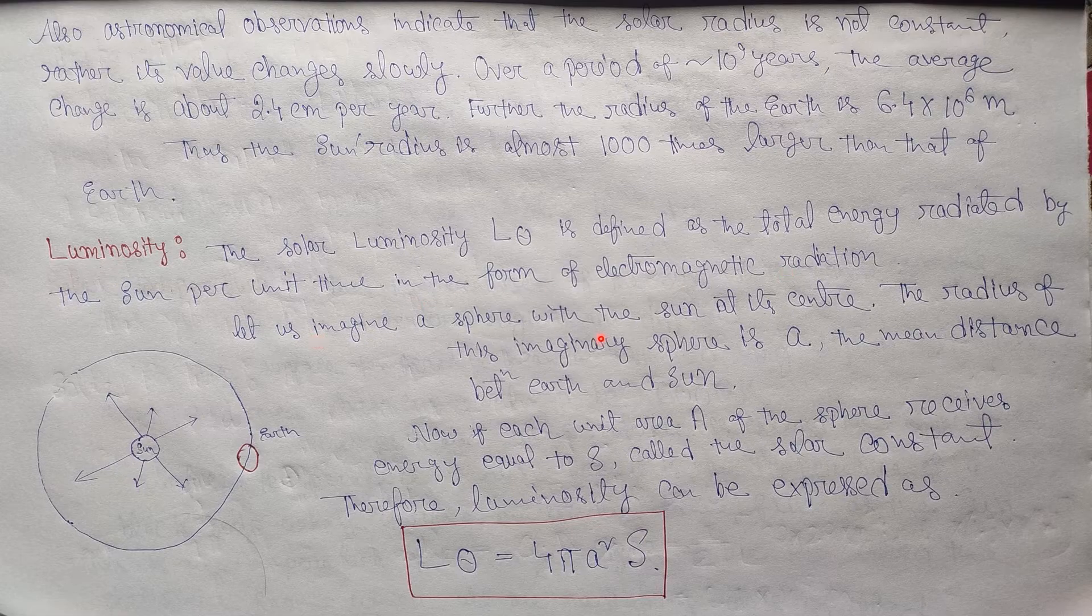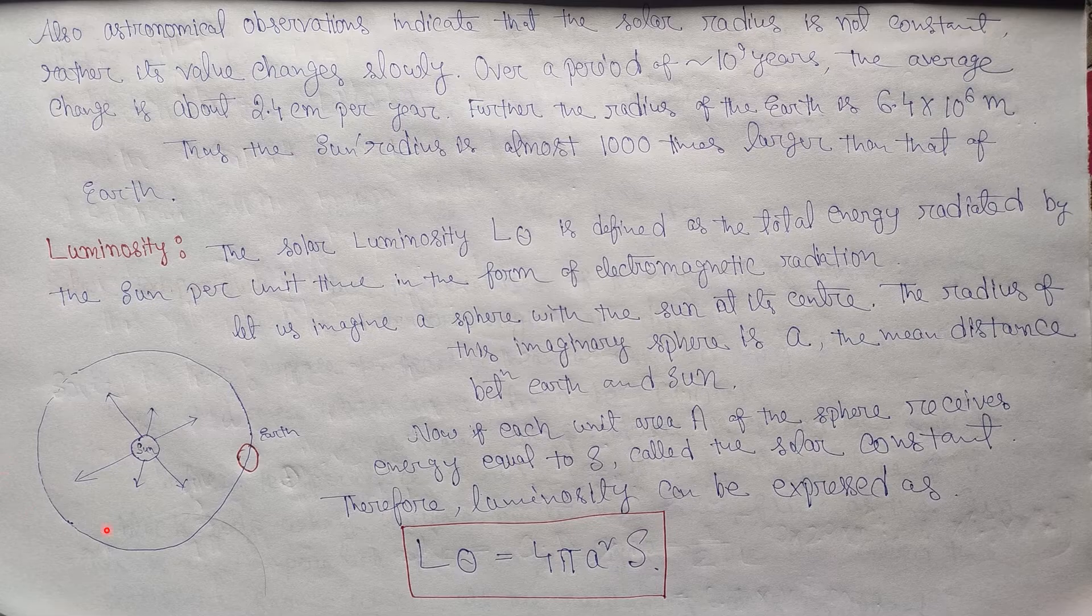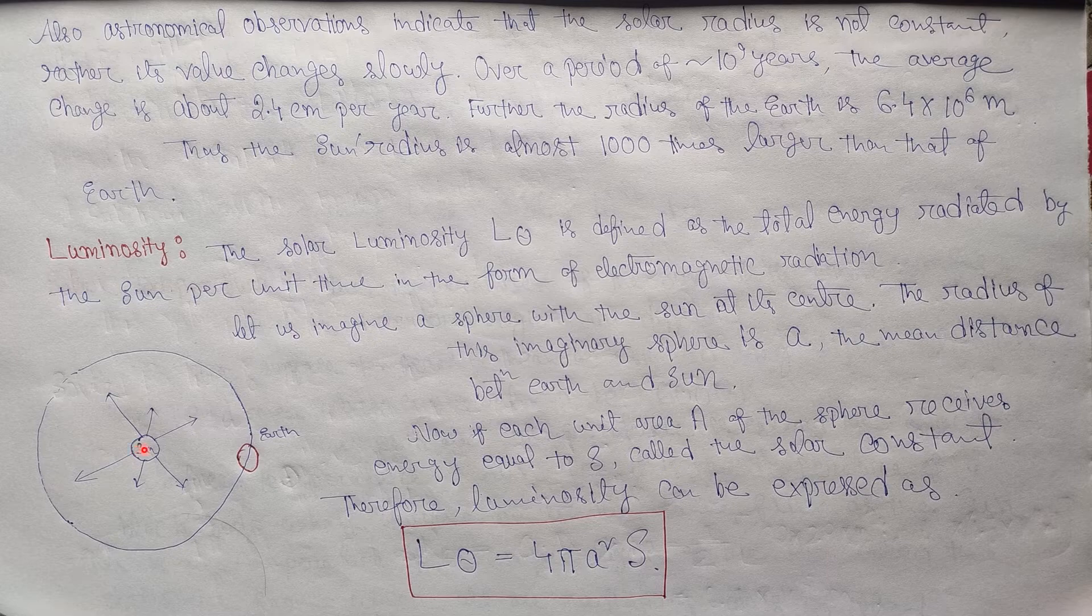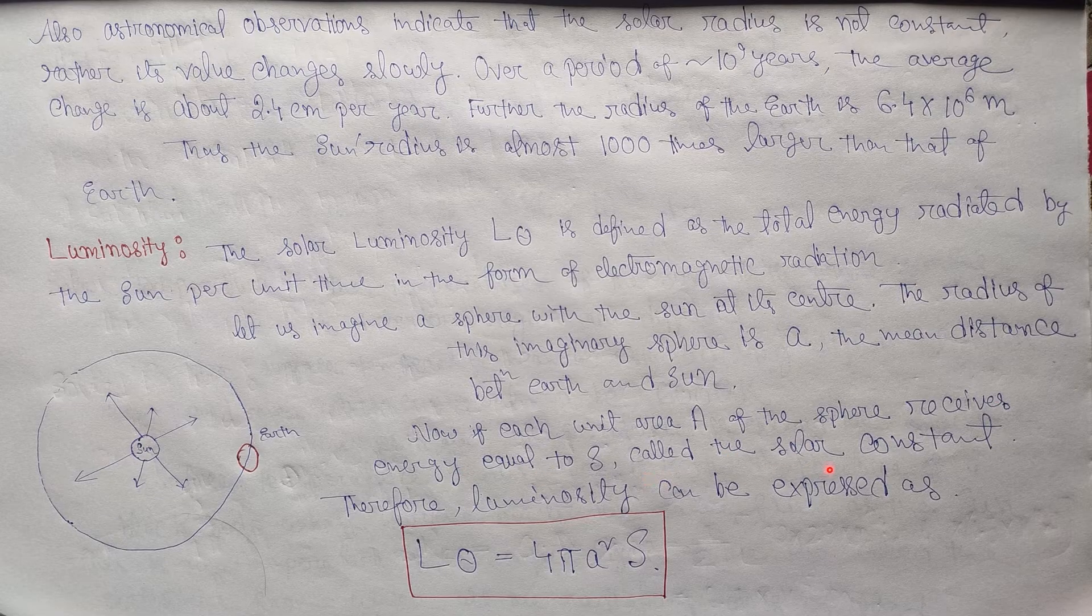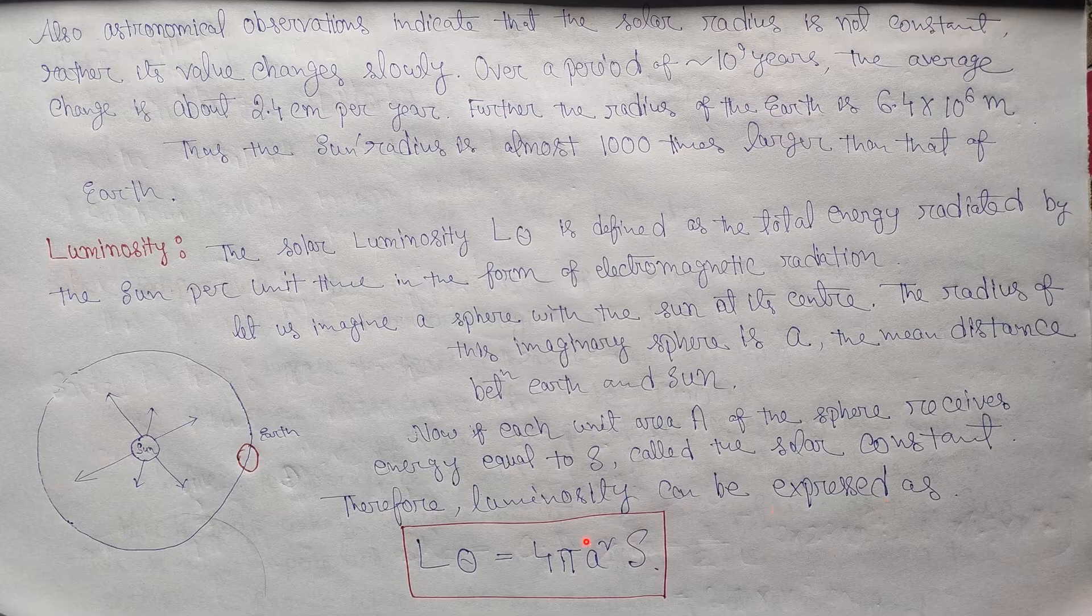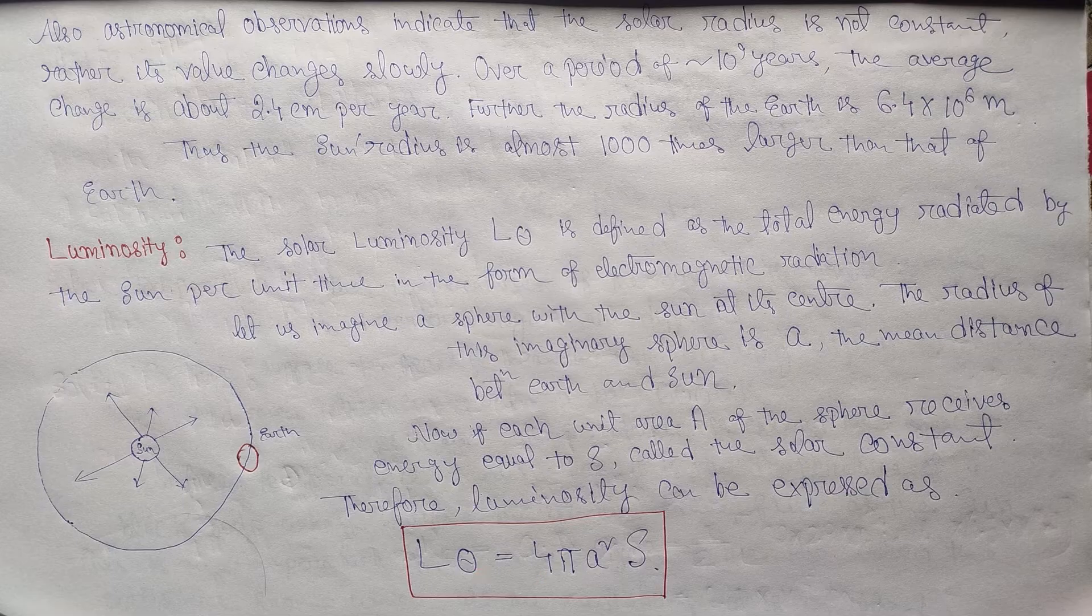So let us imagine a sphere with the sun at its center. The radius of this imaginary sphere is a, the mean distance between earth and sun. So here we assume a sphere at which center sun is placed and this is our earth. Now, if each unit area of this sphere receives an energy equal to S, which is known as the solar constant, therefore the luminosity can be expressed as L☉ = 4πa²S. So S is the energy received per unit area of the sphere, then the total energy received by this sphere will be equal to 4πa²S, which is known as the luminosity.